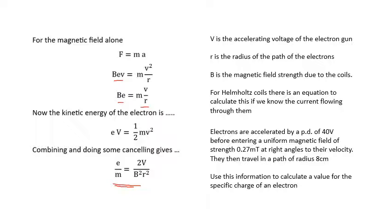Have a go at this. Calculate the specific charge of an electron. The answer: 1.7 times 10 to the 11.